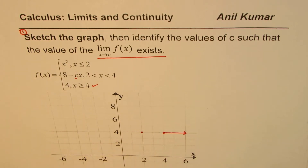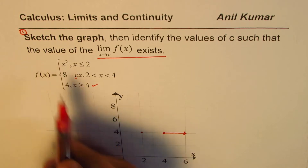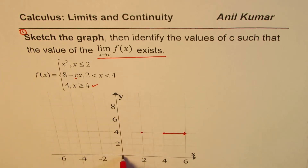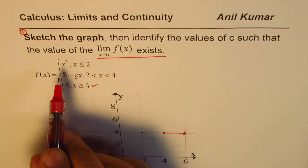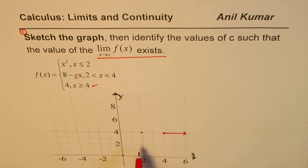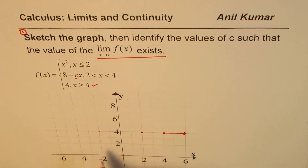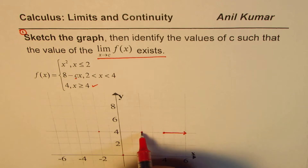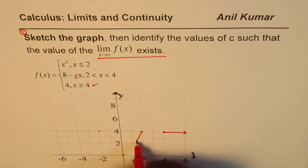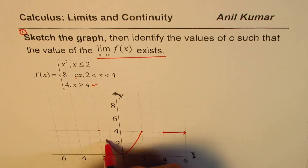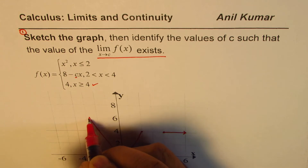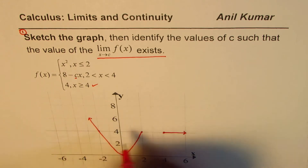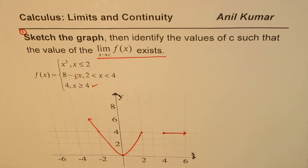We take a point at x = 0 as the vertex. We know it's a parabola opening upward. At x = −2, the value is again 4. So we can sketch a parabola through these points, giving us that part of the graph.